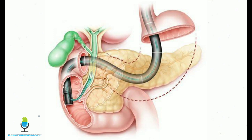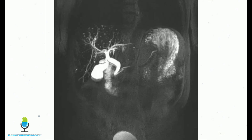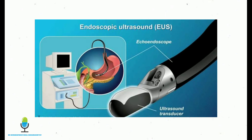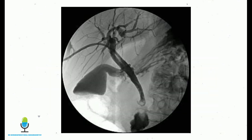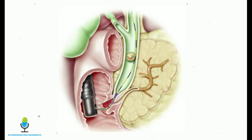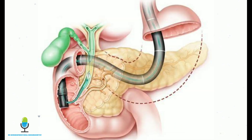In less severe cases of gallstone pancreatitis, biliary imaging using MRCP or ultrasound can be carried out after the acute phase has resolved. If liver function tests return to normal and ultrasound has not demonstrated a dilated biliary tree, laparoscopic cholecystectomy with an on-table cholangiogram is appropriate.